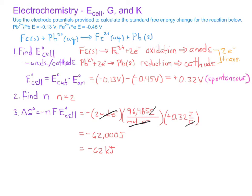Since this standard free energy change is negative, that's another indication that this reaction is spontaneous. This is a good way to check that you have not missed any positive or negative signs. Since the standard cell potential indicated a spontaneous process, and the standard free energy change also indicates a spontaneous process, we probably have not made any errors in forgetting a positive or negative sign.